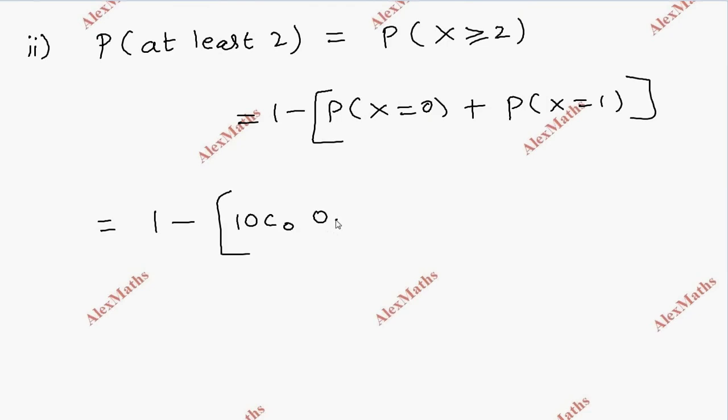So 10c0, 0.12 whole power 0, 0.88 whole power 10 minus 0. Plus 10c1, 0.12 whole power 1, 0.88 whole power 9.